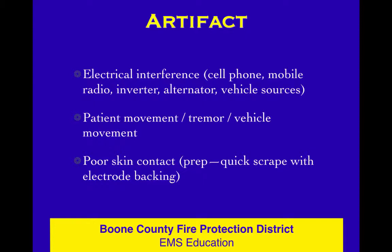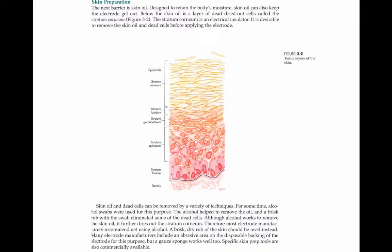Many times we don't even do the most cursory quick prep of the skin. If you will just take that plastic backing that your sticky electrode comes with out of the package, put the wire on the electrode, peel the electrode off, and then take that little piece of plastic and just quickly scrape where you're going to put the electrode — it will make a huge difference. Just get a little bit of that dead skin and skin oil off. There's also sweat, blood, and dirt. At least there's a layer of dead skin and some oil on almost all of us, so just scrape it real quick.